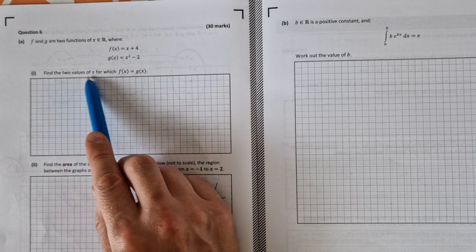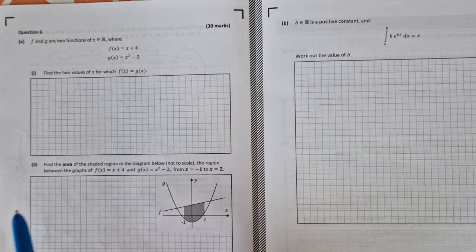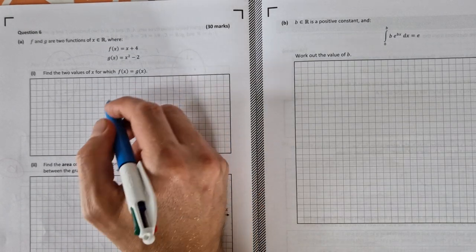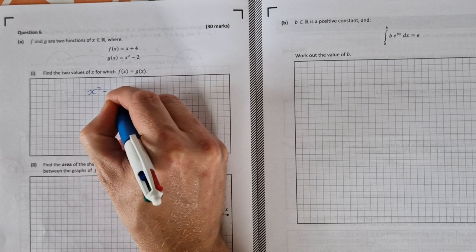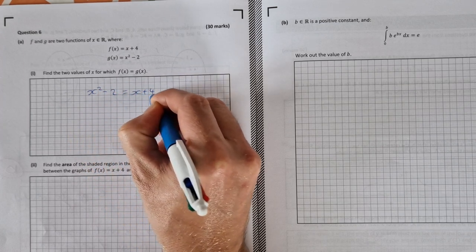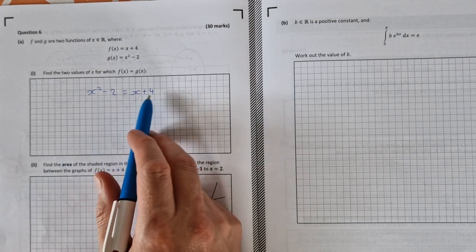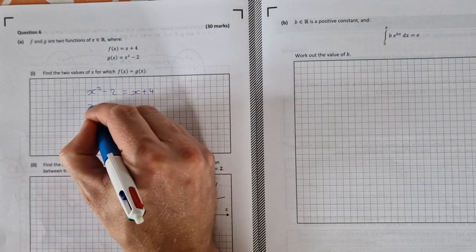Find the two values of x for which f(x) = g(x). All you need to do is let them equal to each other, so we can say x² - 2 = x + 4. You can see that this is a quadratic. Get everything to one side, you'll get x² - x - 6 = 0.